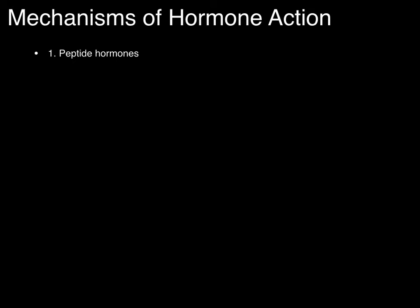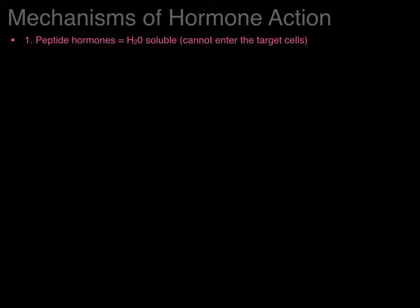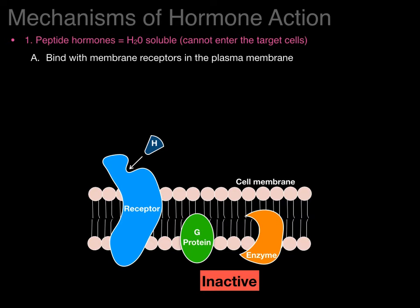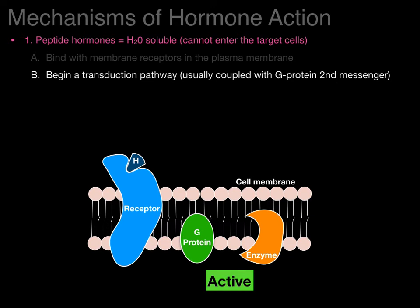The mechanisms of hormone action — there are two. Peptide hormones are water-soluble, and as such they cannot enter target cells directly through the plasma membrane, so they bind to a protein receptor on the outside — membrane receptors in the plasma membrane. Here we see a section of a plasma membrane with the phospholipid bilayer and a receptor in blue. The hormone binds to the receptor and activates a G protein cascade. The binding of a peptide hormone to the outside portion begins this transduction pathway through a G protein second messenger, inducing an allosteric conformational change in the intracellular portion of the receptor.